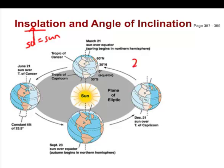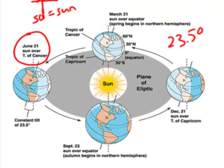The Earth is tilted at an angle of about 23.5 degrees, and as we travel around the Sun in our yearly orbit, this angle means certain parts of the Earth get more sunlight than others at different times of the year. For example, on June 21st we are tilted towards the Sun at 23.5 degrees, so the northern hemisphere gets more solar exposure. This is in fact the longest day of the year, when the Tropic of Cancer — the northern tropic — lines up directly with the Sun.